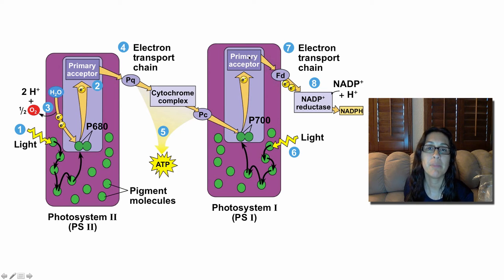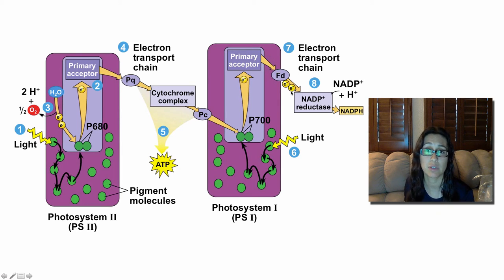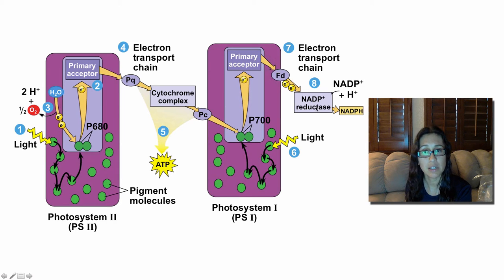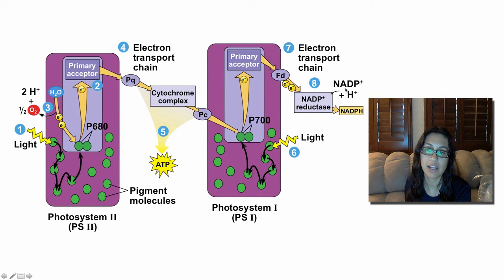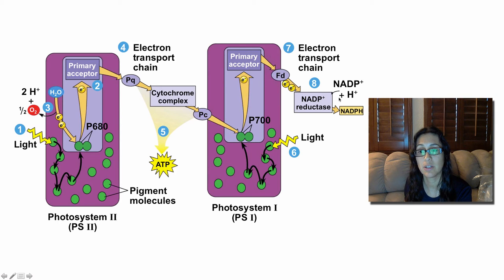Step seven: from the primary electron acceptor in photosystem I, the electrons move down a second electron transport chain. As they move down this chain, no hydrogen ion gradient is created — there's no pumping of hydrogen ions in or out of the thylakoid. But when the electrons get to the end, there is an enzyme called NADP+ reductase, which catalyzes the connection of a hydrogen ion and the two electrons onto NADP+, thereby making NADPH. Essentially, NADP+ reductase puts the electrons and the hydrogen onto NADP+, and now we have our energy stored there to be used as reducing power later on.